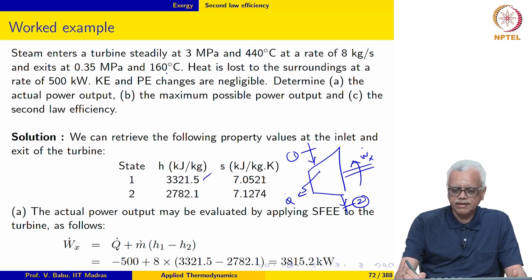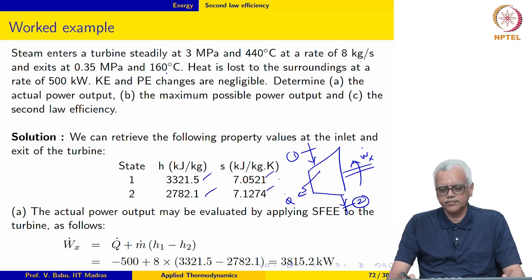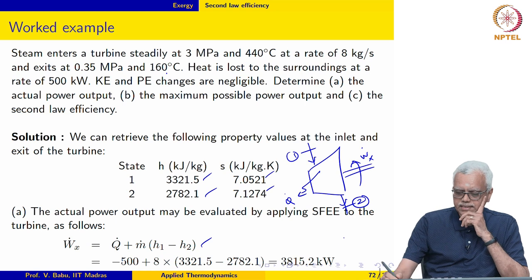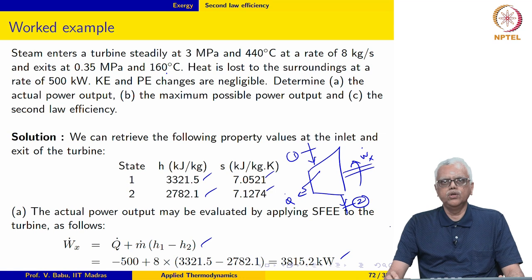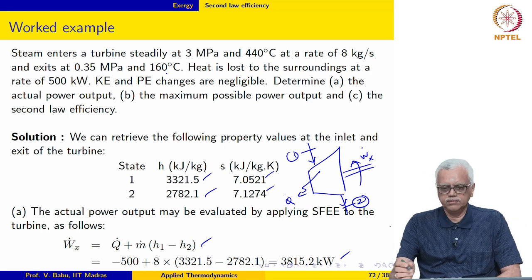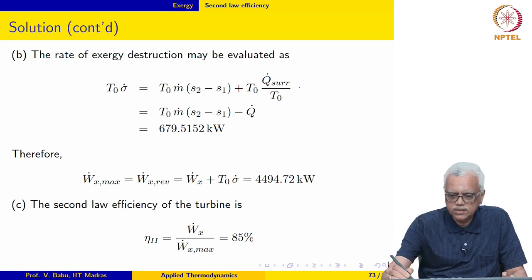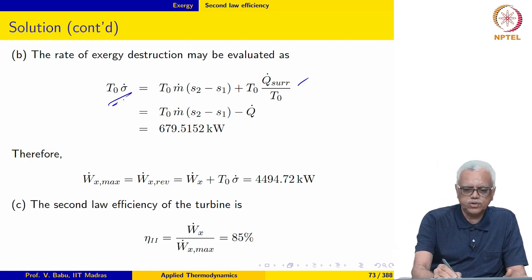We retrieve specific enthalpy and specific entropy values at inlet and exit from the superheated steam table. Applying the steady flow energy equation to the turbine, the actual power output is 3815.2 kilowatts. Adding the lost work to this gives the maximum possible or reversible work. The rate of exergy destruction may be evaluated as T0 times sigma dot.